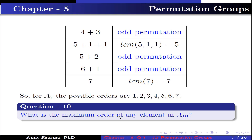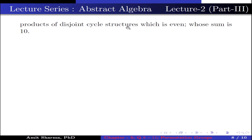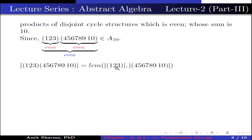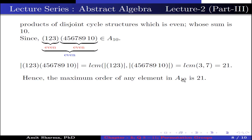Question number 10: What is the maximum order of any element in A10? For maximum order, we need to find a disjoint cycle structure that is even and whose lengths sum to 10. The product of permutations (1,2,3) and (4,5,6,7,8,9,10) belongs to A10 because (1,2,3) is odd cycle length — an even permutation — and (4,5,6,7,8,9,10) is also odd cycle length — an even permutation — and the product of two even permutations is even. The order equals LCM of 3 and 7, which equals 21. Hence the maximum order of any element in A10 is 21.